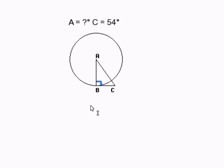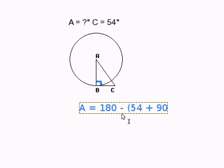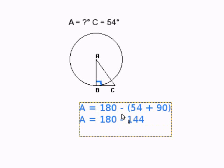So we can just do some basic subtraction. Let's say A is 180 minus 54 plus 90. A is 180 minus 144. So that means angle A is then 36 degrees.